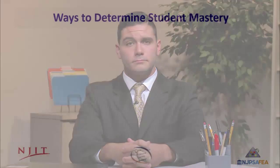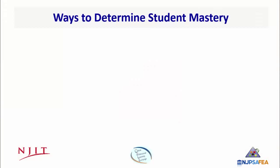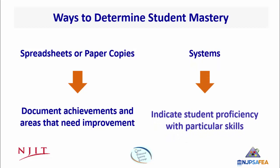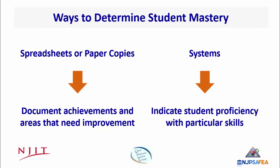Formative assessment is meant to have a deep impact on student learning. Though not all of them need to be recorded, teachers must at some point determine if a student has mastered the goal. This can be accomplished using spreadsheets or paper copies to track student work and document achievements and areas needing improvement. Teachers might also use a system to indicate student proficiency with particular skills, such as a number from 1 to 5 or a checkmark system.